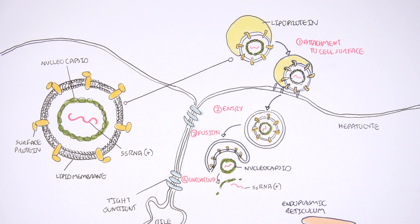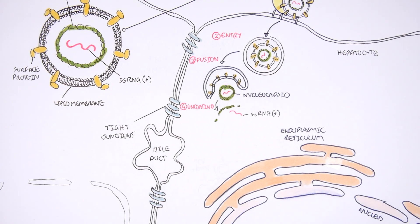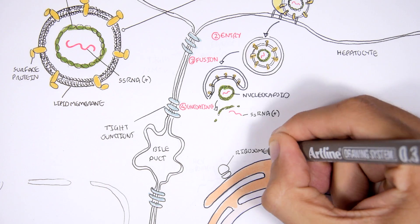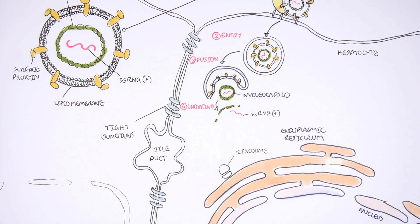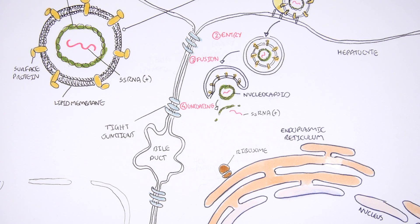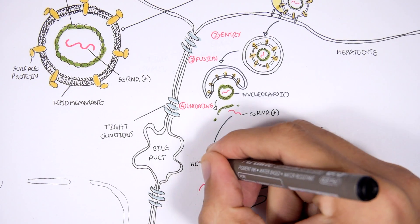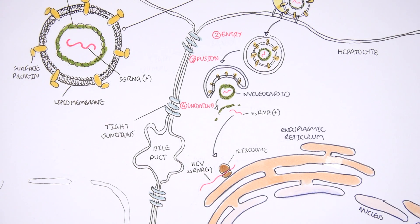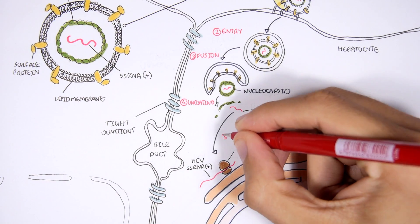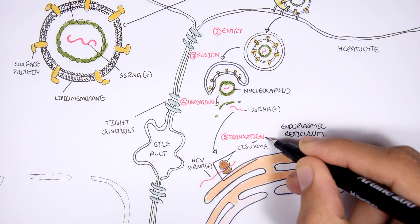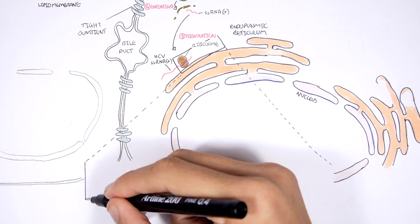So what will happen to this viral single-stranded RNA? It will actually use the host's ribosomes, which are around the endoplasmic reticulum, to make its own proteins. The hepatitis C virus will use the host's machinery — the ribosomes and the amino acids — to make their own proteins. This process is known as translation.